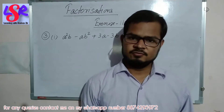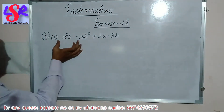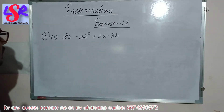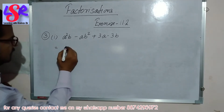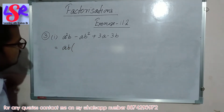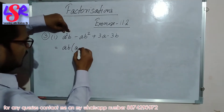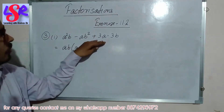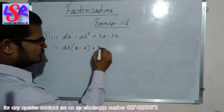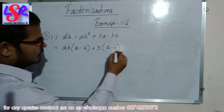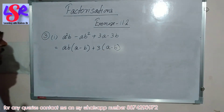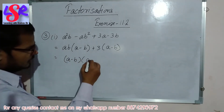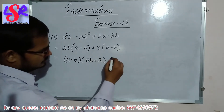Question number 3, first part — here we are having a squared b minus ab squared plus 3a minus 3b. From the first two we take ab as common, leaving a minus b. From the last two we take 3 as common, leaving a minus b. The bracket a minus b is common, so we take it as common and are left with (a minus b)(ab plus 3) as the answer.